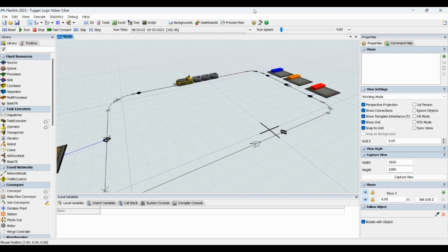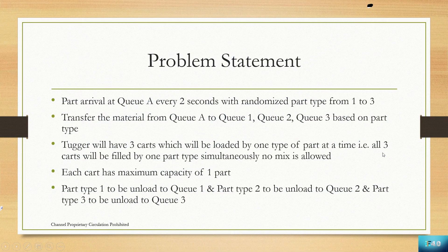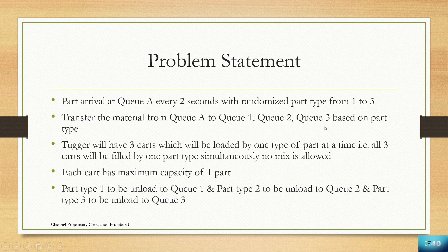This is the problem statement we are going to follow in today's modeling. Our first step is to create a QA where we will have a part arrival every two seconds with randomized part type ranging from part type 1 to part type 3. We will transfer the material from QA to queues: part type 1 to Q1, part type 2 to Q2, and part type 3 to Q3 respectively.